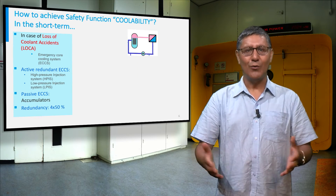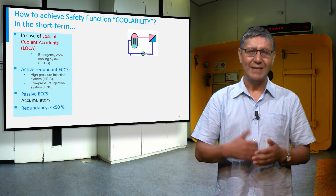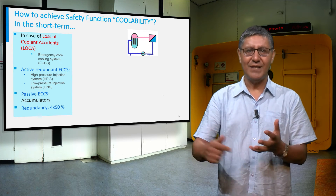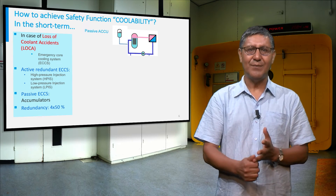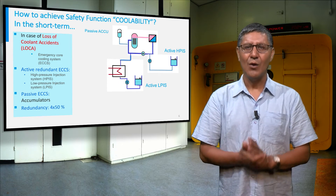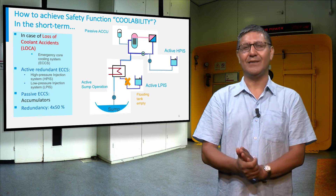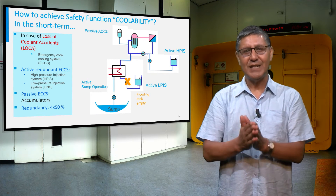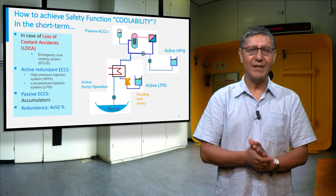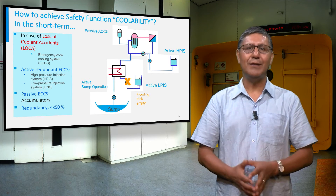An emergency core cooling system is used to ensure the coolability of the core in case of a loss-of-coolant accident. It consists of passive and active systems able to inject cold water into the core. All active systems take water from the flooding tank. It is a redundant system with four trains, each one with 50% capacity, meaning that only two systems are needed to ensure core coolability.